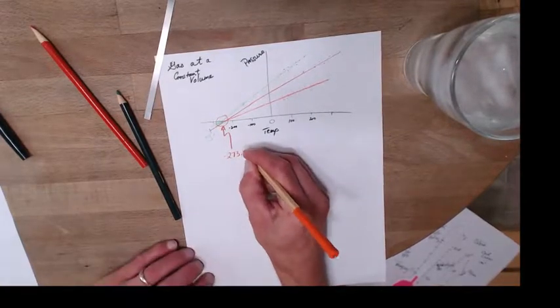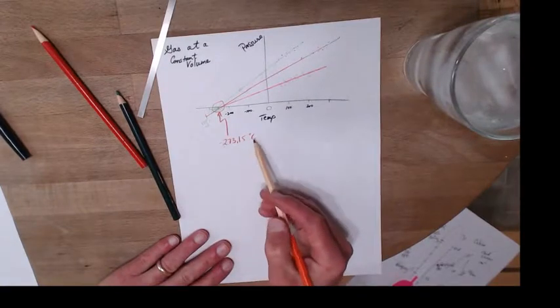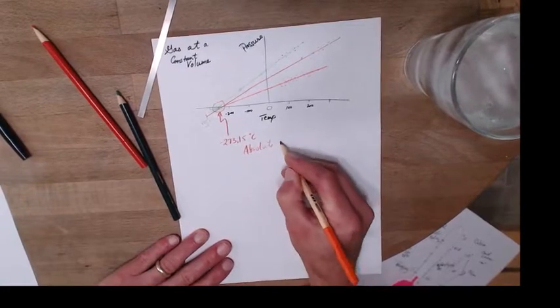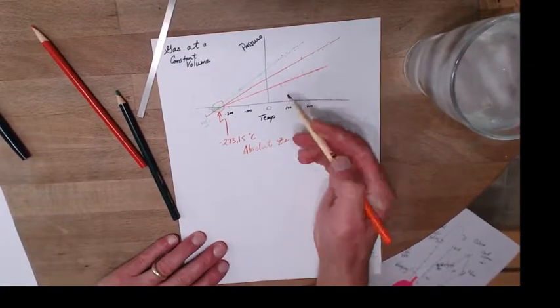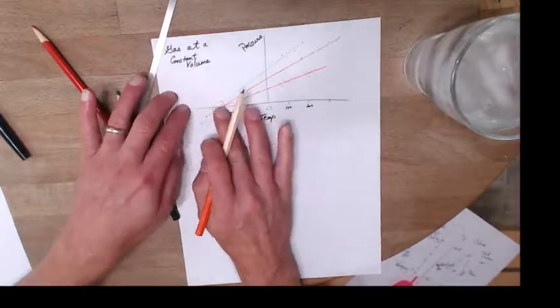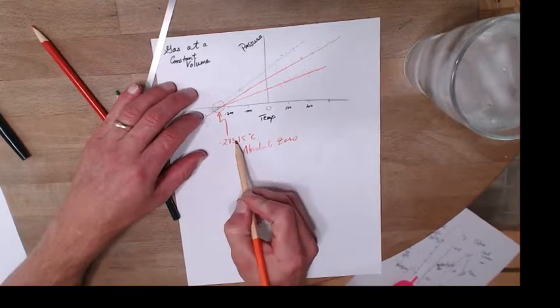Down here where they're all gonna end up at some zero pressure. And this turns out to be negative 273.15 degrees Celsius. This is what he called absolute zero, because at this point the pressure is zero.